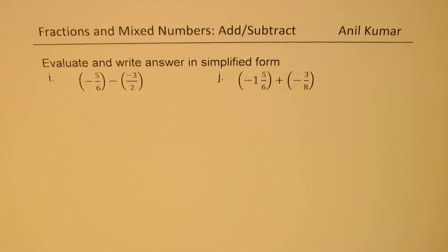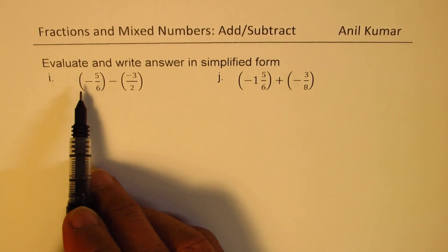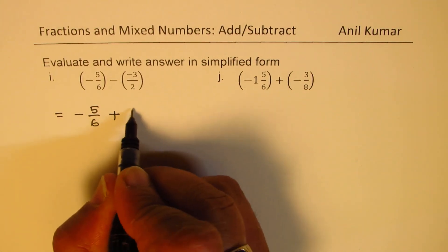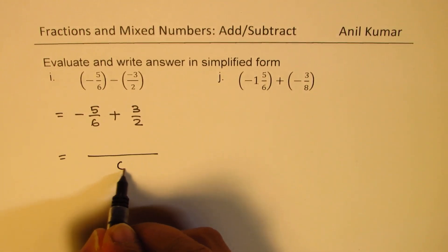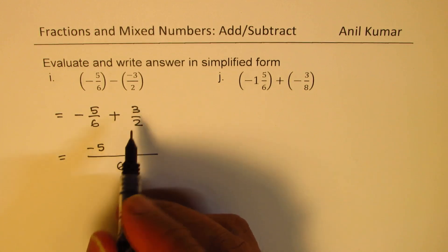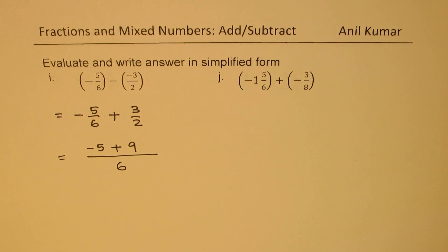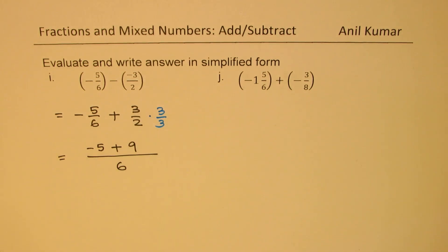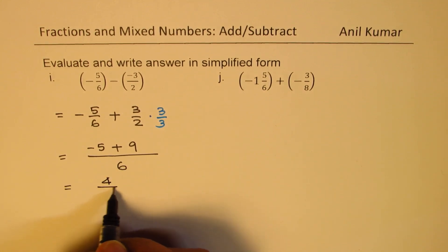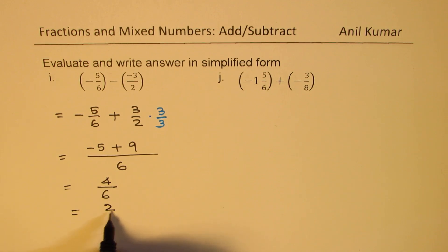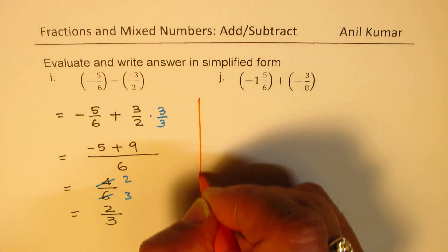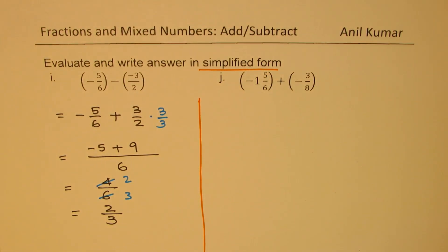Now let's get ready with some slightly difficult questions. Here we have negative 5 over 6 minus minus 3 over 2. So let's rewrite this: we get minus 5 over 6, and minus and minus is plus 3 over 2. The common denominator here is 6. So we get negative 5 here. To make 6 in the denominator, I have to multiply by 3, so we get plus 9 in the numerator. 9 minus 5 is 4, so we get 4 over 6. 4 over 6 can be divided by 2, and we get 2 over 3 as the lowest term. It is important to always simplify the result to the lowest term.